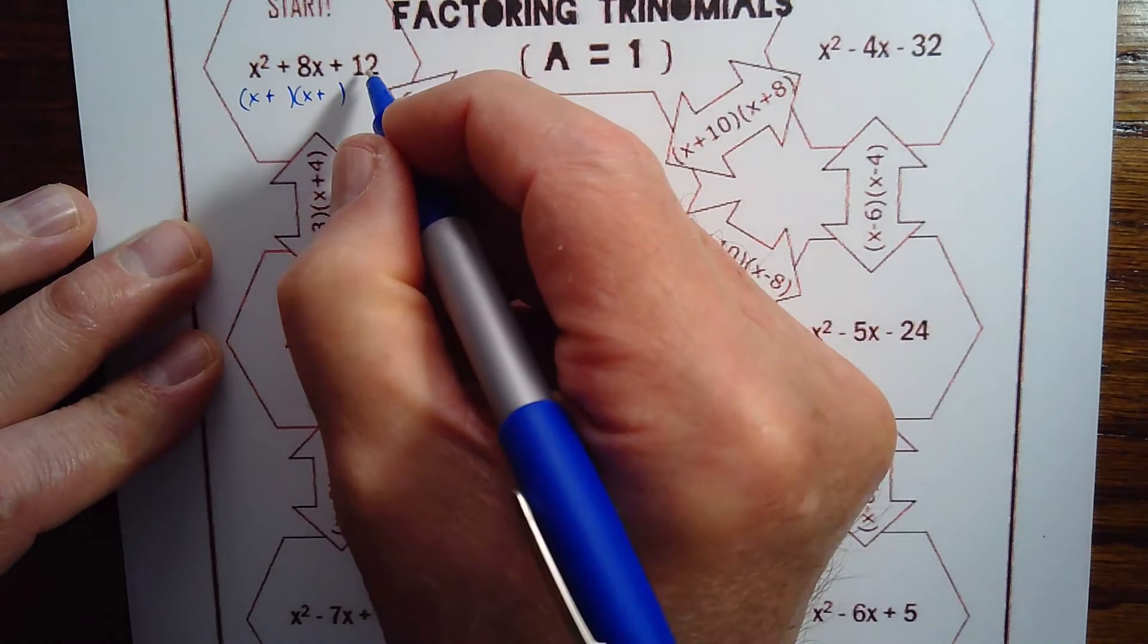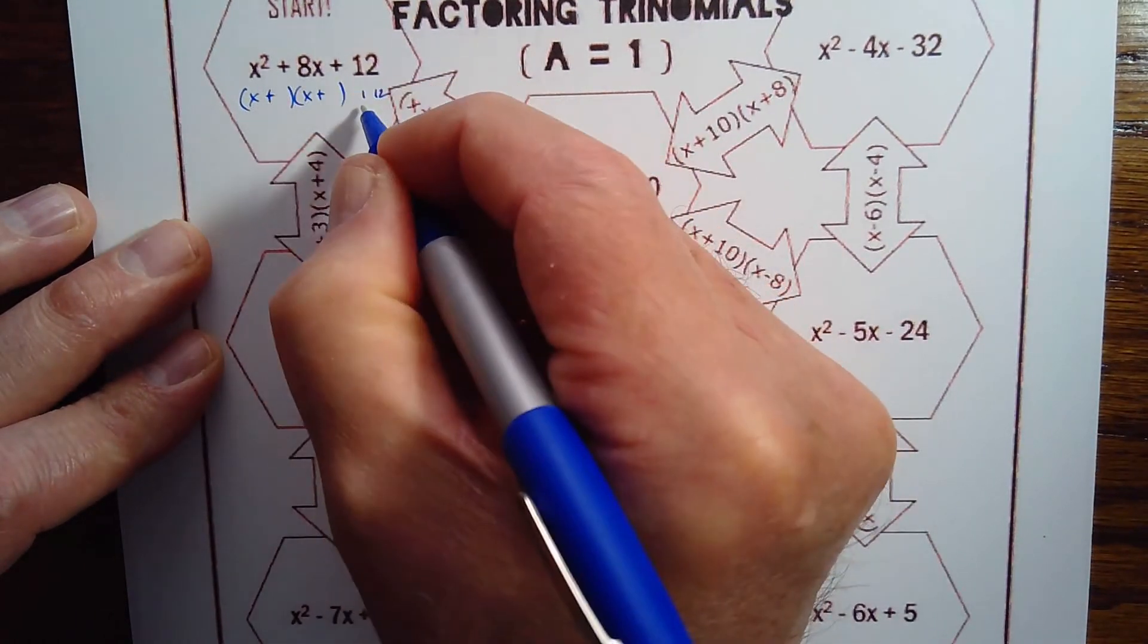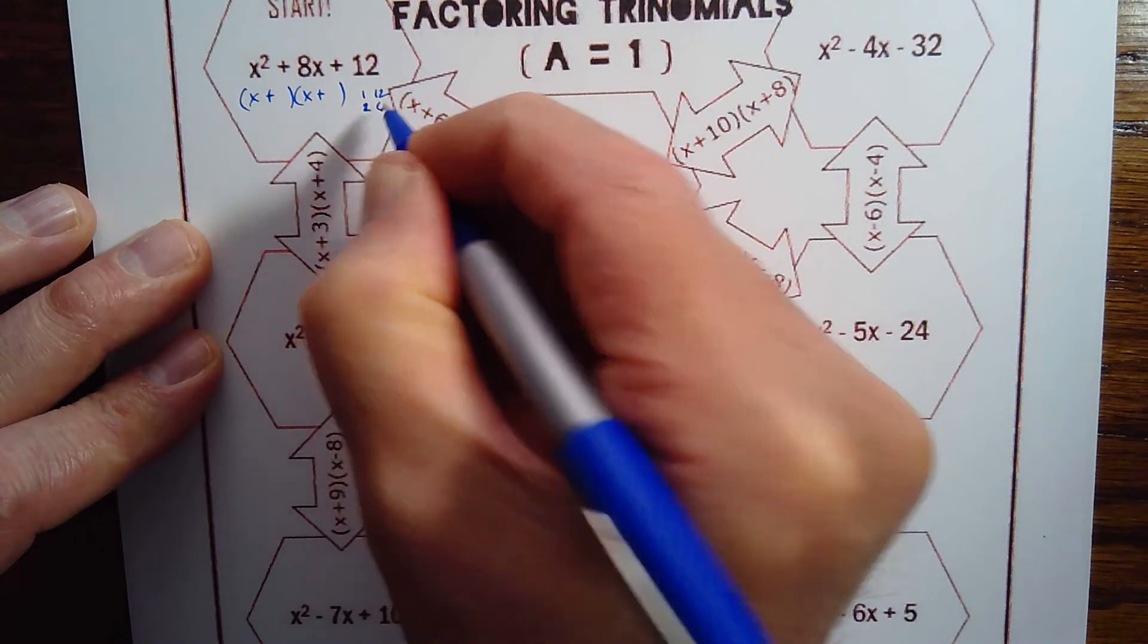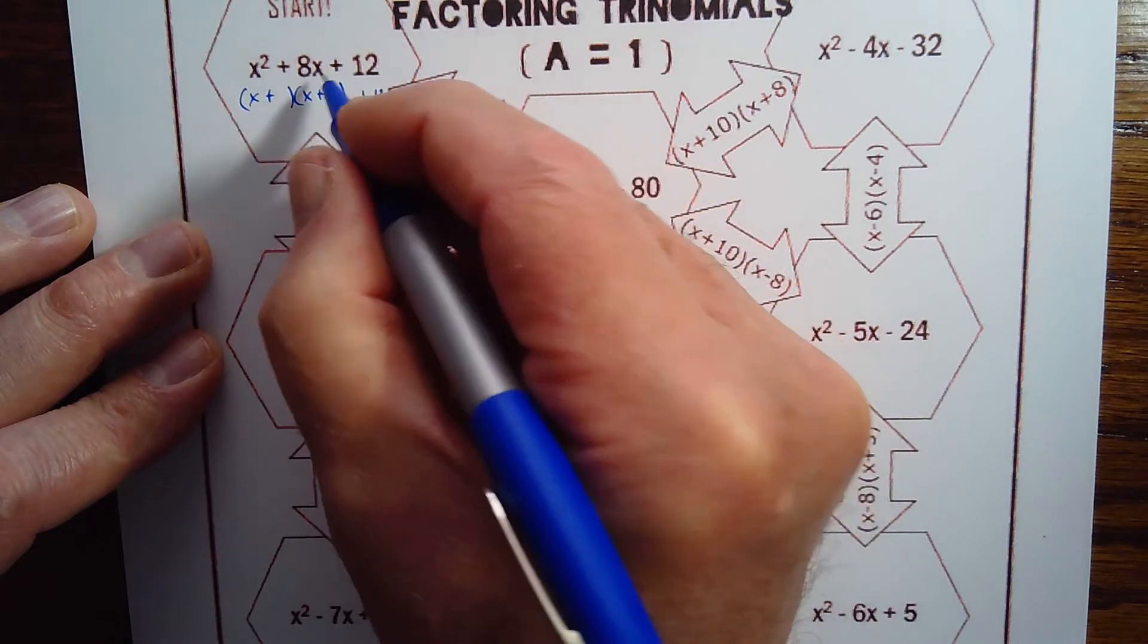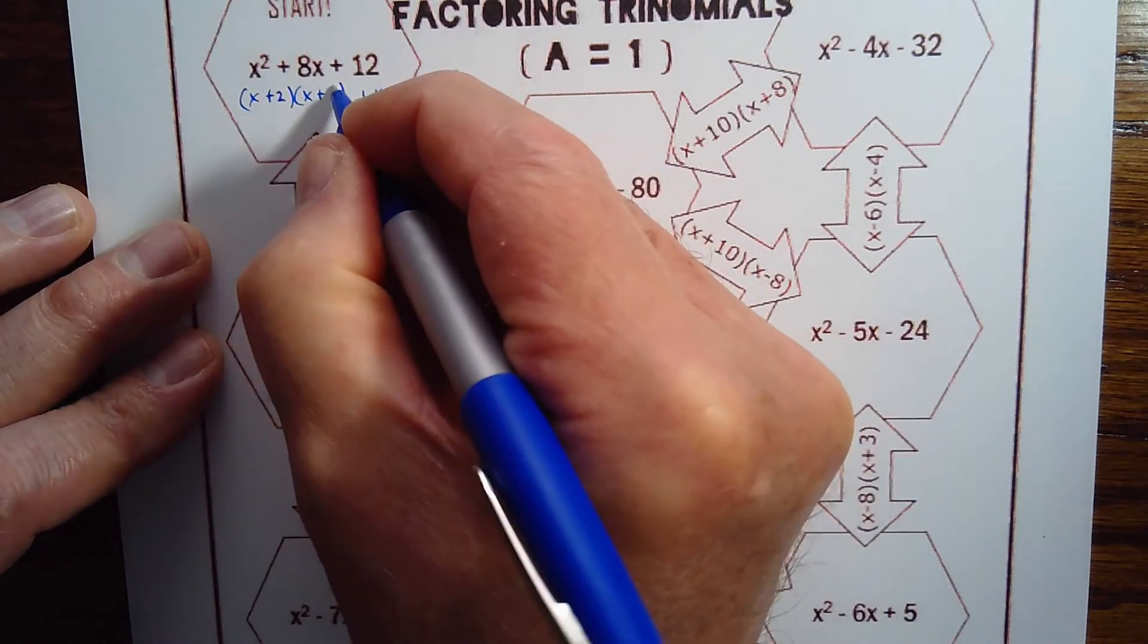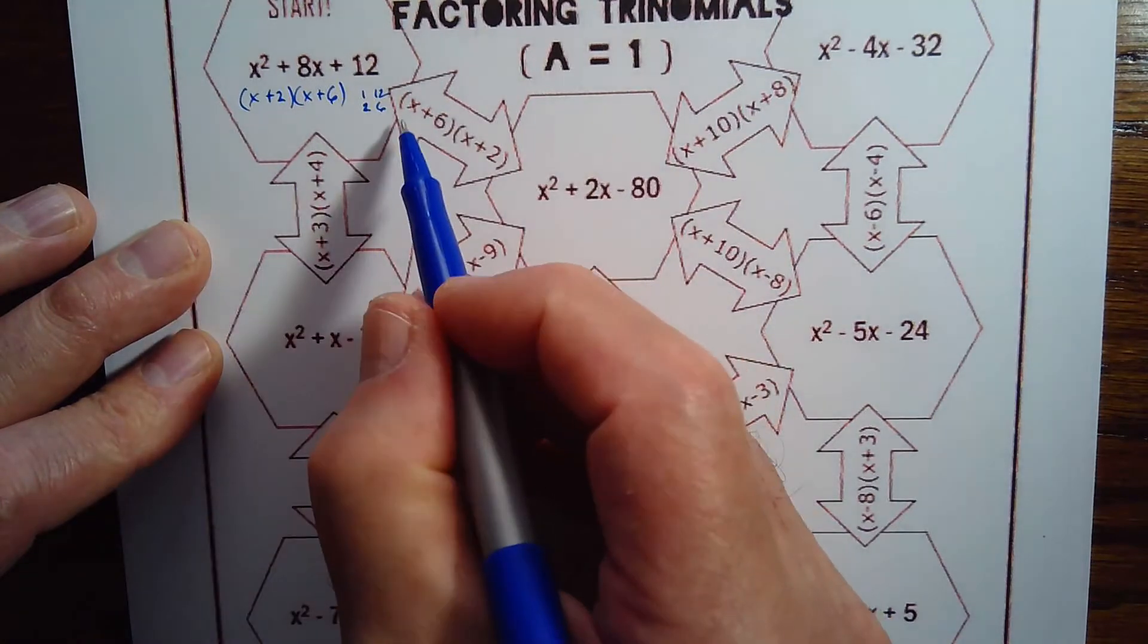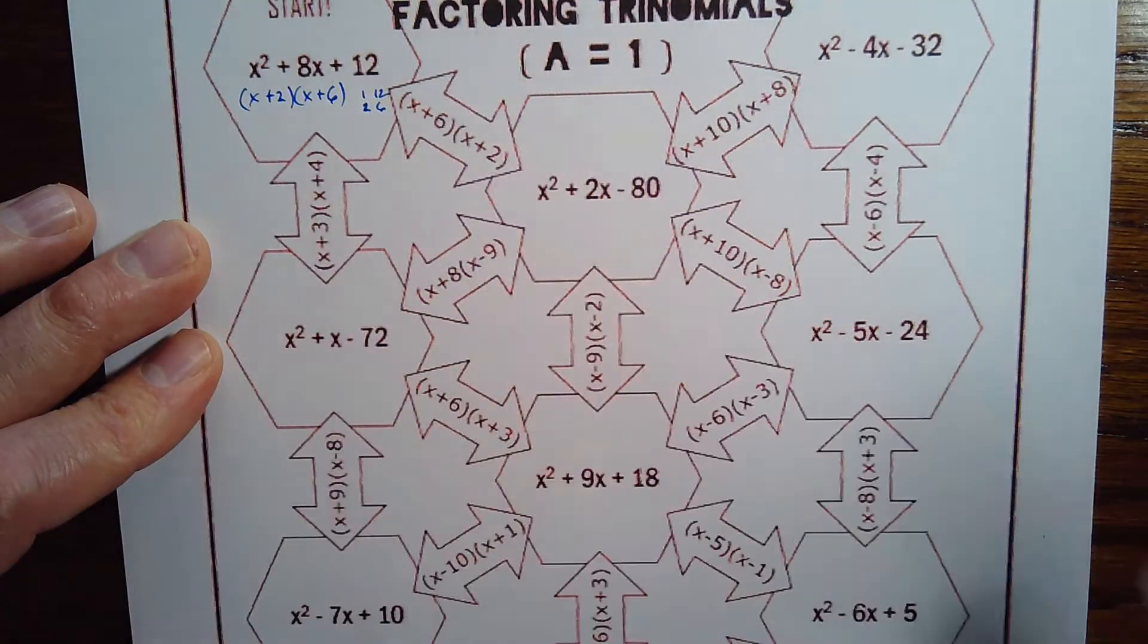And now I do my factoring of 12. Would 1 and 12 get me an 8? No. How about 2 and 6? Yes, 2 plus 6 makes 8, 2 times 6 makes 12. So a 2 and a 6, and then the order of that doesn't matter. They've actually got the x plus 6 first and the x plus 2 second, so that's fine. So I'm going to just put red around these.